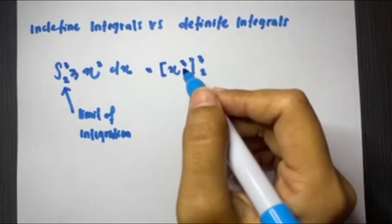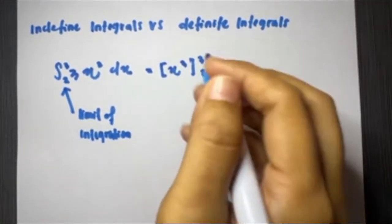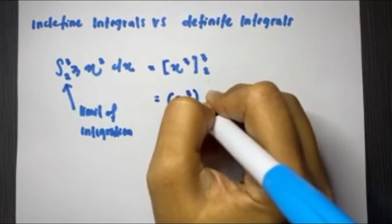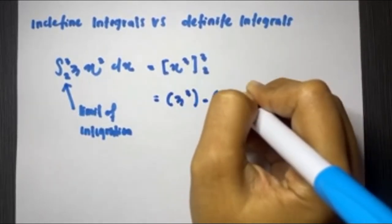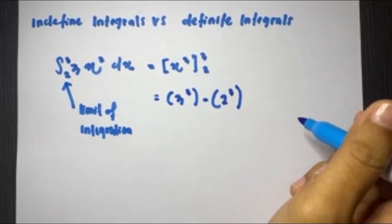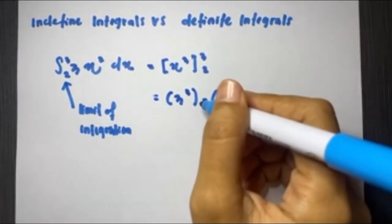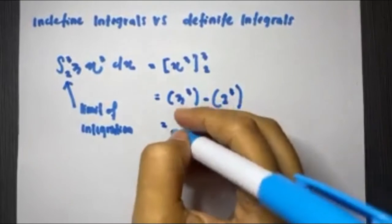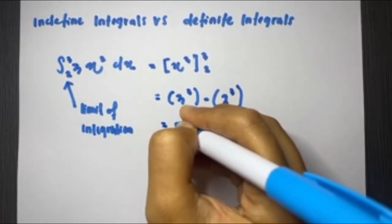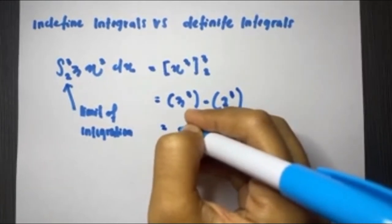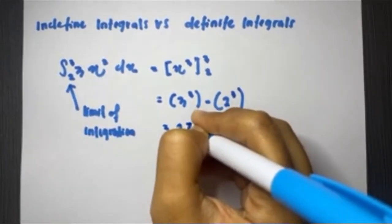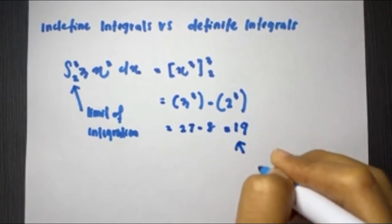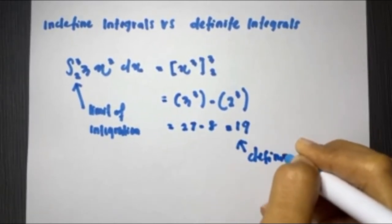We take the limits and substitute them in. We put in the upper limit 3 and subtract the lower limit 2: 3³ − 2³ = 27 − 8 = 19. So 19 is the answer to this definite integral.